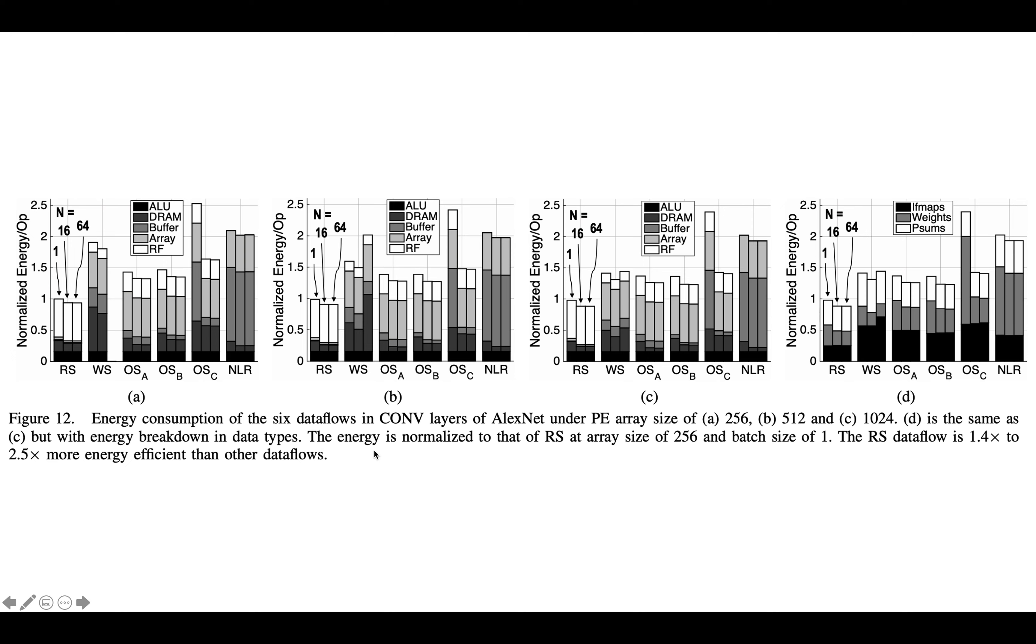D is the same as C, but with energy breakdown in data types. And the energy is normalized to that of what's called row stationary RS, which is the data flow style that they're advocating for. At array size of 256 and batch size of 1, the row stationary data flow is 1.4 to 2.5x more energy efficient than other data flows.